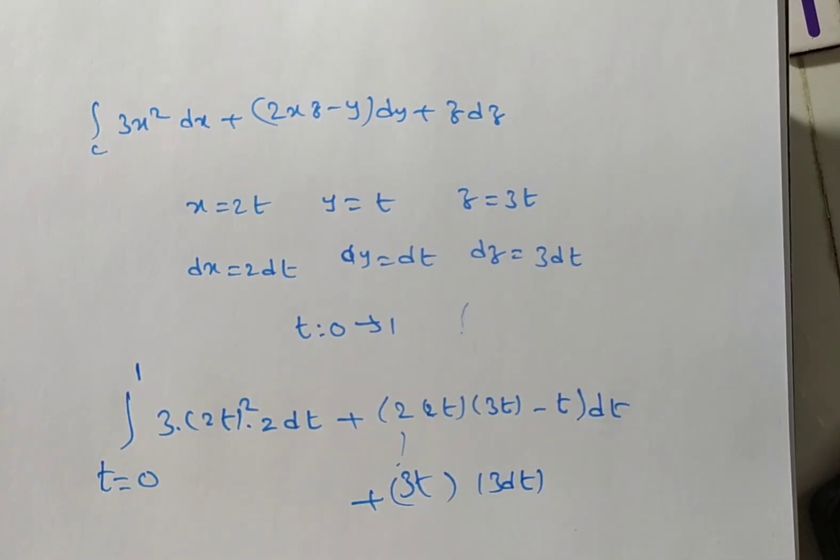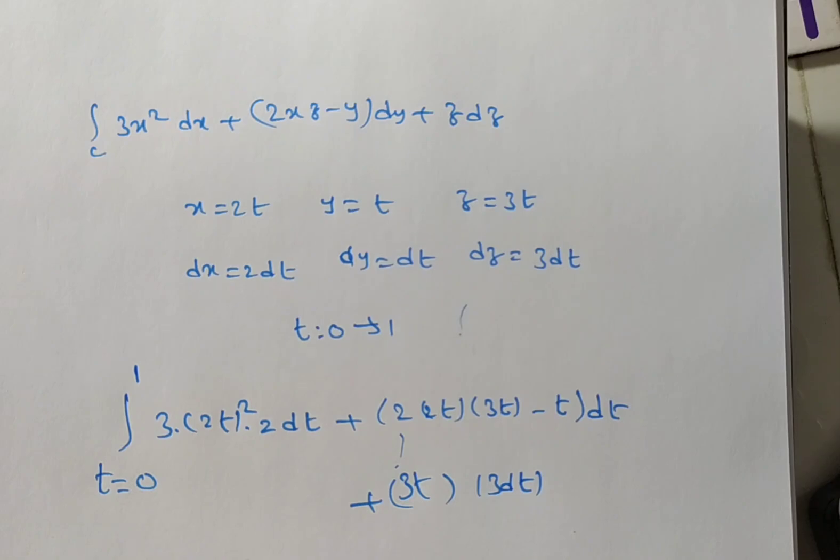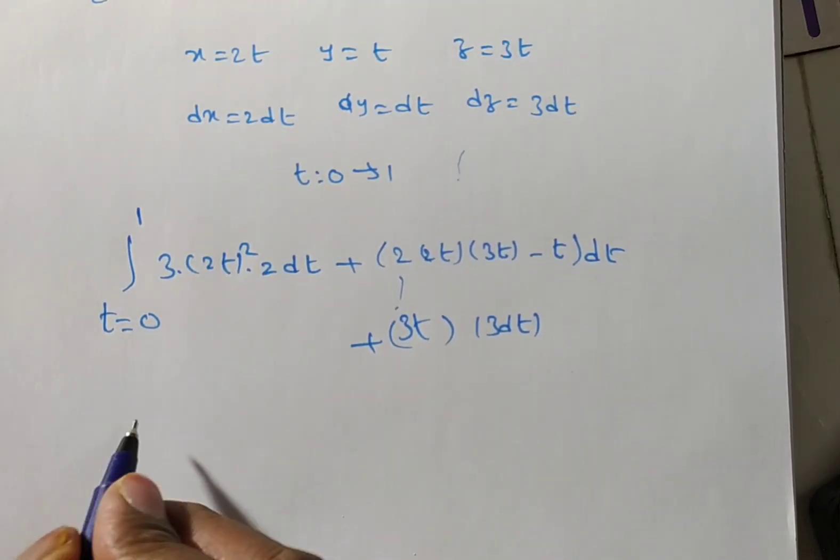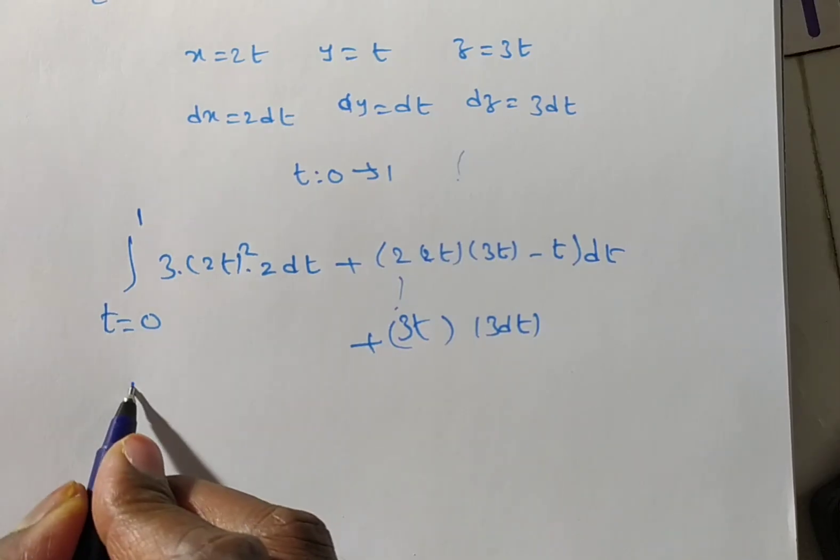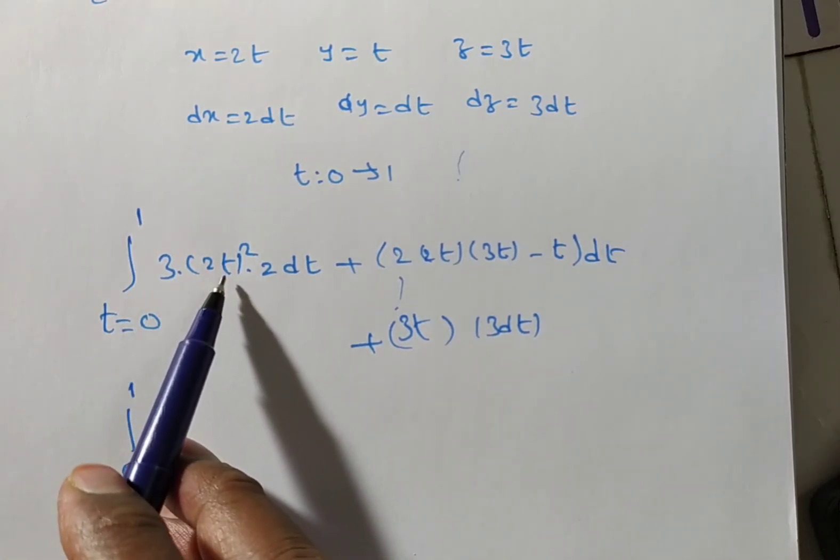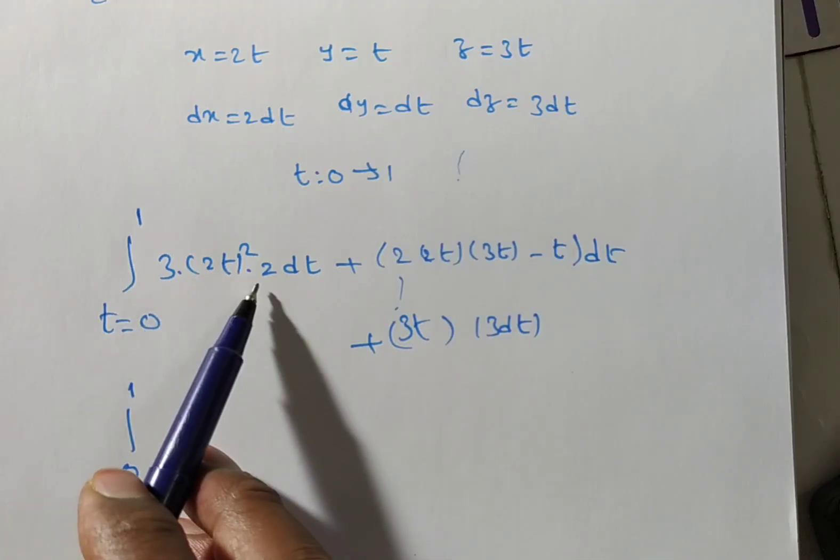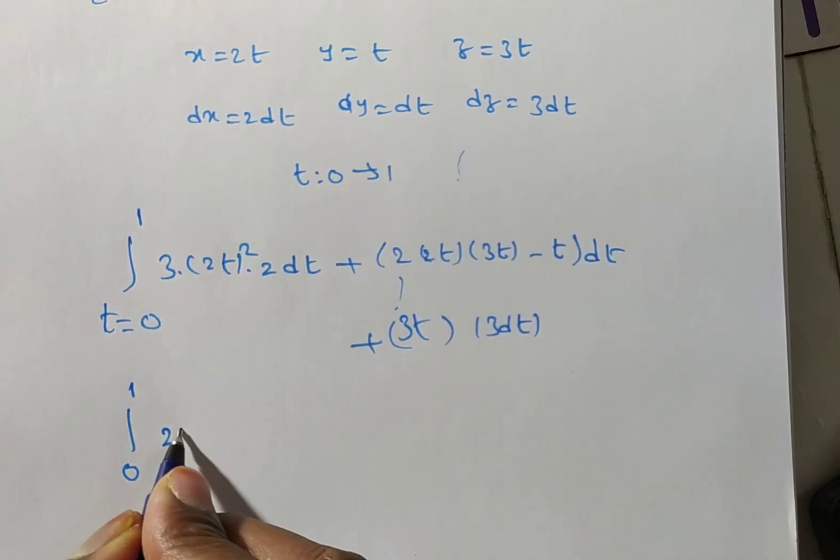Now, you simplify this. In this one, you observe all the terms are containing dt. So, you can take dt outside. Common and it will become, t is from 0 to 1. 2t square is nothing but 4t square. 4, 3s are 12, 12, 2s are 24. So, 24t square.